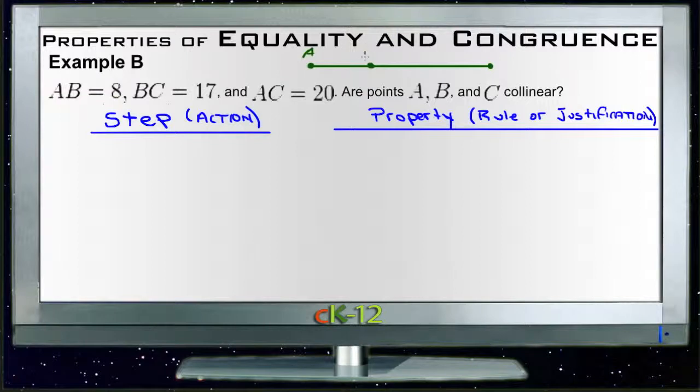That segment AB plus segment BC is equal to segment AC. So if these two things, if AB + BC are equal to AC, then AC is a single line and A, B, C are all collinear.